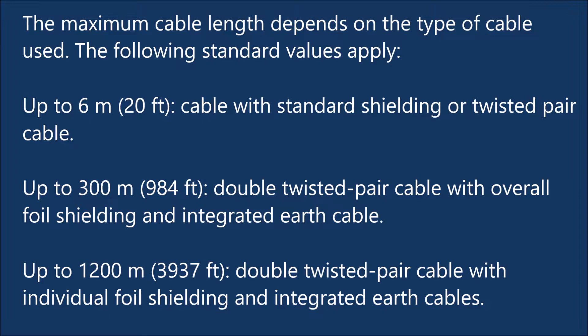Up to 300 meters (984 feet) — double twisted pair cable with overall foil shielding and integrated earth cable. Up to 1,200 meters (3,937 feet) — double twisted pair cable with individual foil shielding and integrated earth cables.